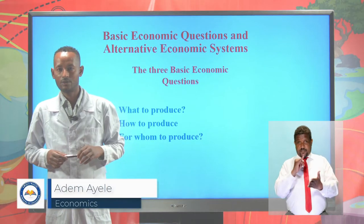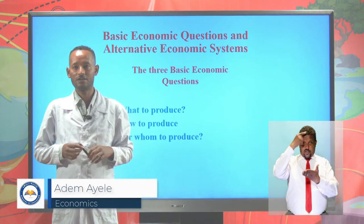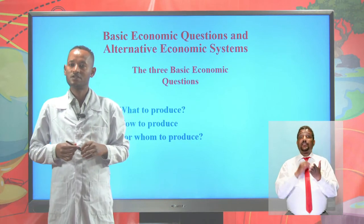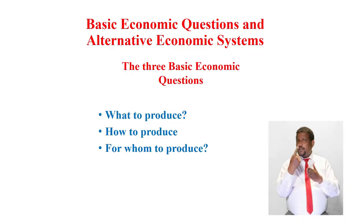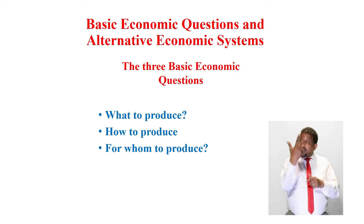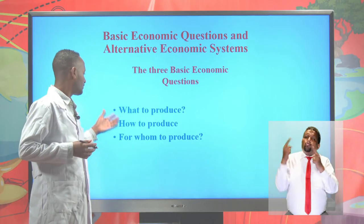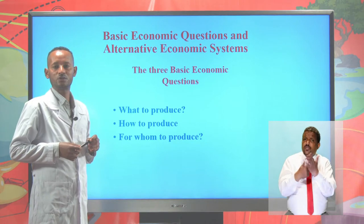This is an economics revision lesson for grade 11. This is the fourth revision lesson of Unit 1, which is about the basic economic questions and alternative economic systems. There are three basic economic questions called what to produce, how to produce, and for whom to produce — that confronts every society.